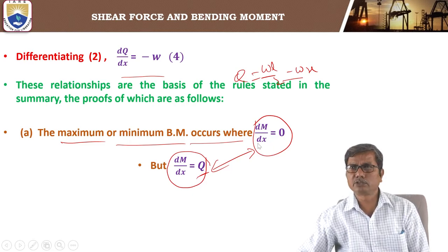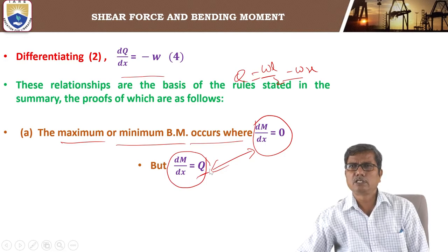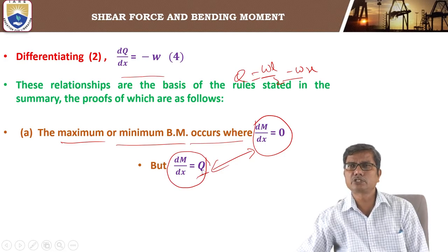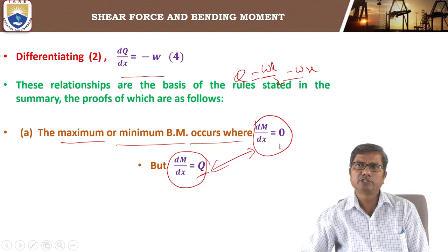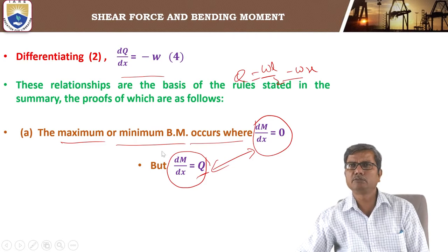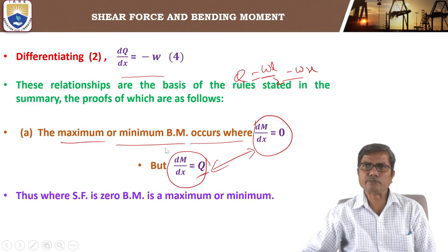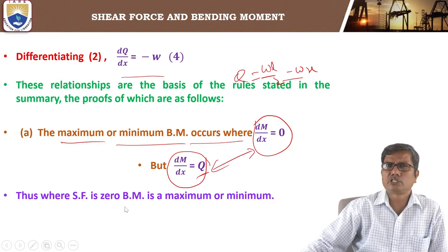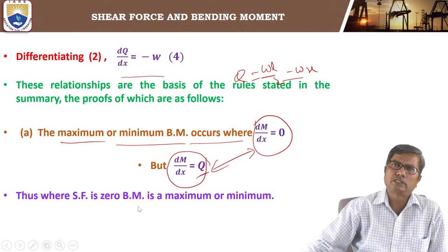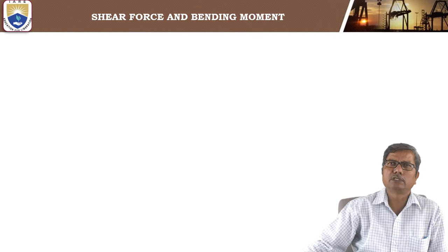The condition for maximum bending moment is dM by dx equal to zero, and we have the relation dM by dx equal to Q. So dM by dx equals zero means Q equals zero. For maximum or minimum bending moment at any section, Q must be zero. Thus, where the shear force is zero, the bending moment will be either maximum or minimum.